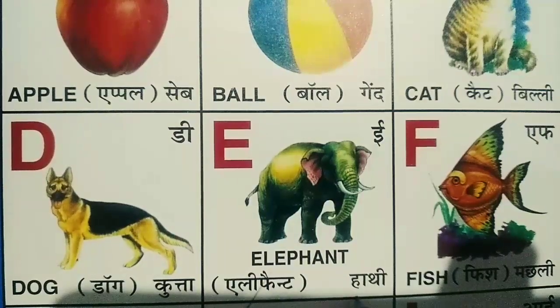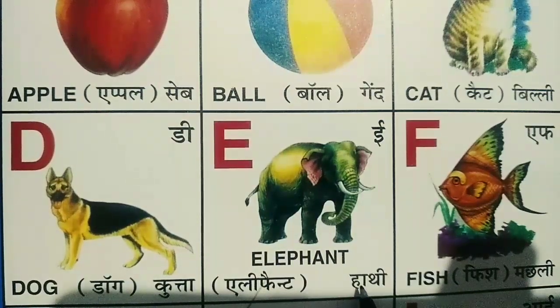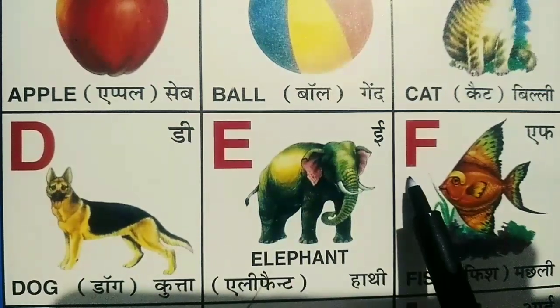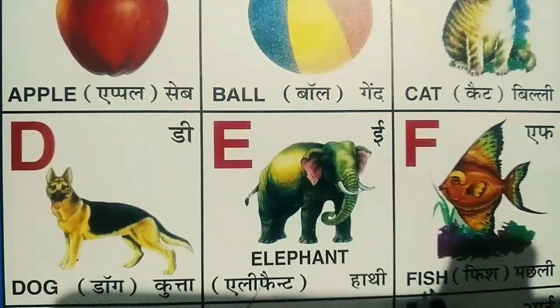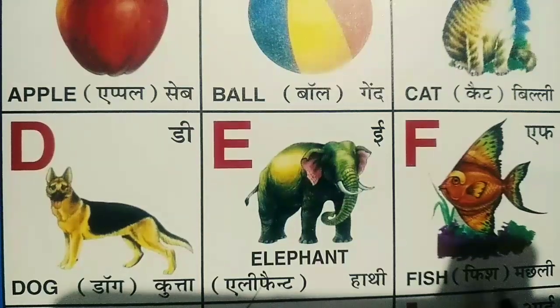E for elephant. Elephant means hathi. F for fish. Fish means machli.